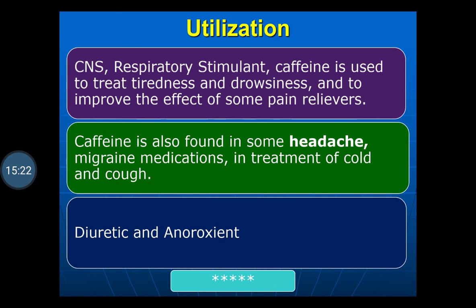Caffeine is used as a central nervous system respiratory stimulant. It is used to treat tiredness and drowsiness and to improve the effect of some pain relievers. Caffeine is also found in headache and migraine medications and is used in the treatment of cold and cough. It is also used as a diuretic, though better drugs are now available. Additionally, it is used as an anorexiant to decrease appetite for weight reduction.